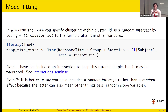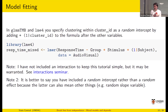In both glmmTMB and lme4, you specify a cluster by adding plus (1 | cluster_id). The '1' means it's a random intercept by cluster ID. In my example I've added (1 | Subject), which means I have a random intercept for each subject. I've also got my fixed effects: group, which is musician versus non-musician, and stimulus, which is auditory versus visual. I'm most interested in stimulus — that's the research question. I could have included an interaction but didn't because it makes everything more complex.